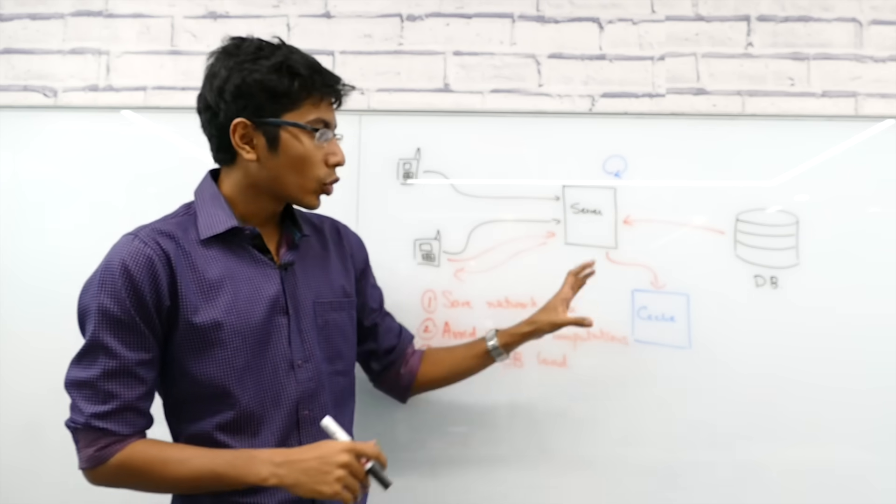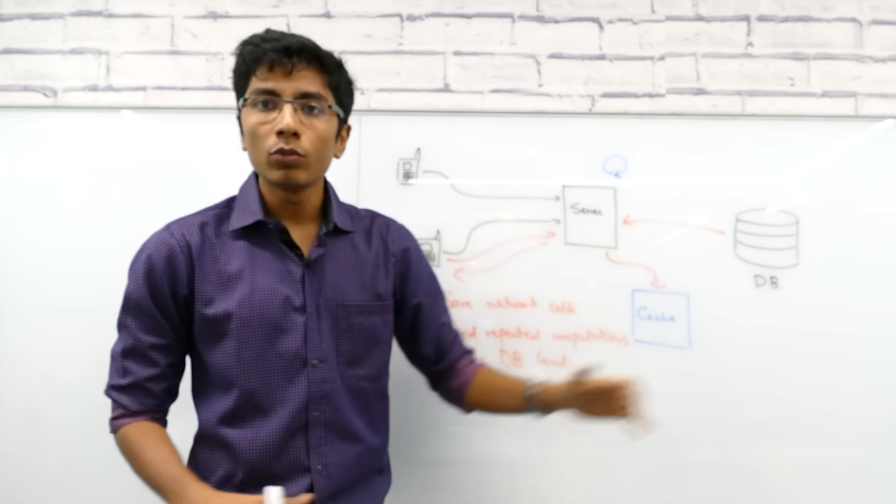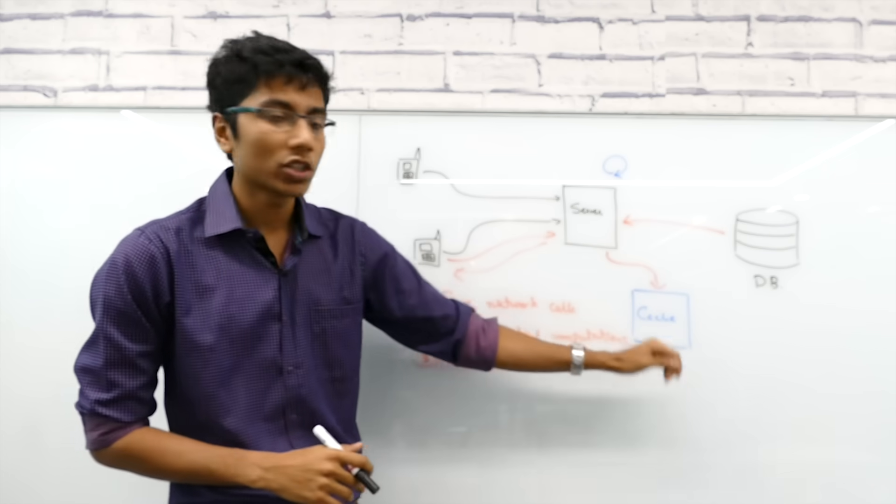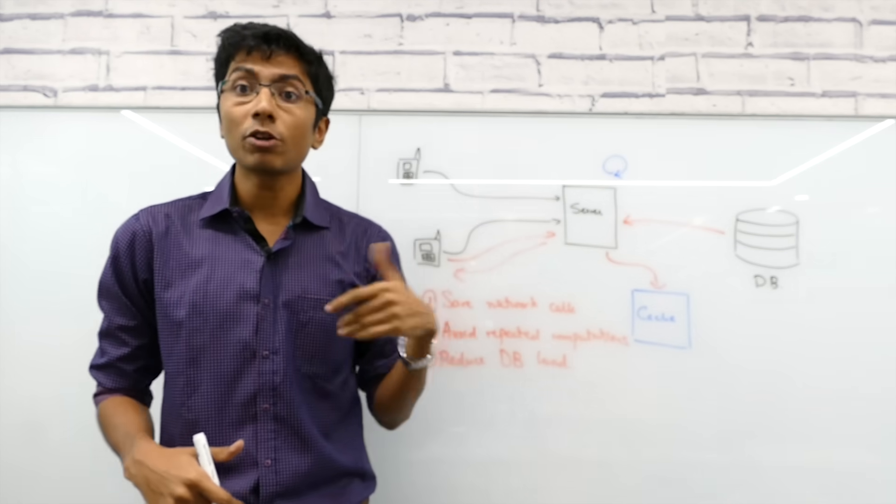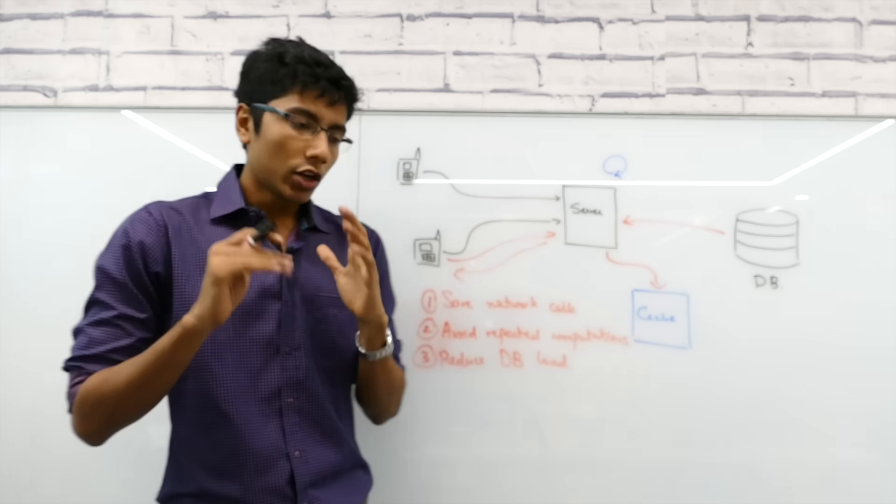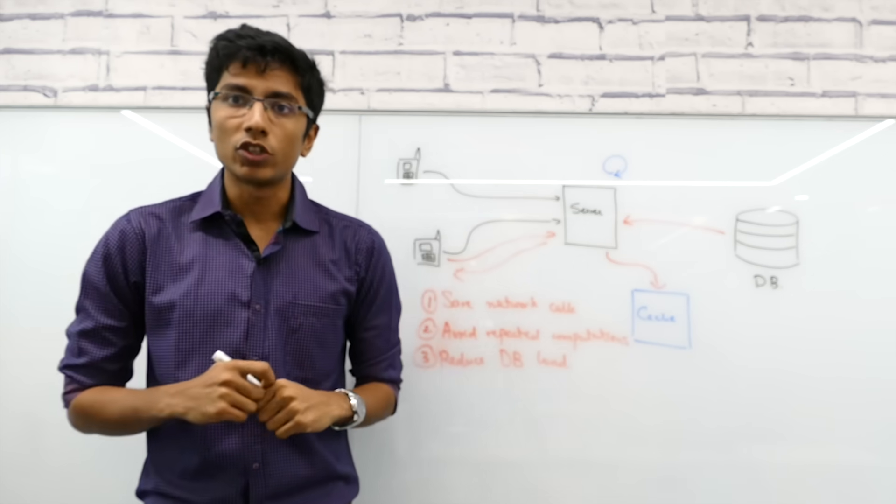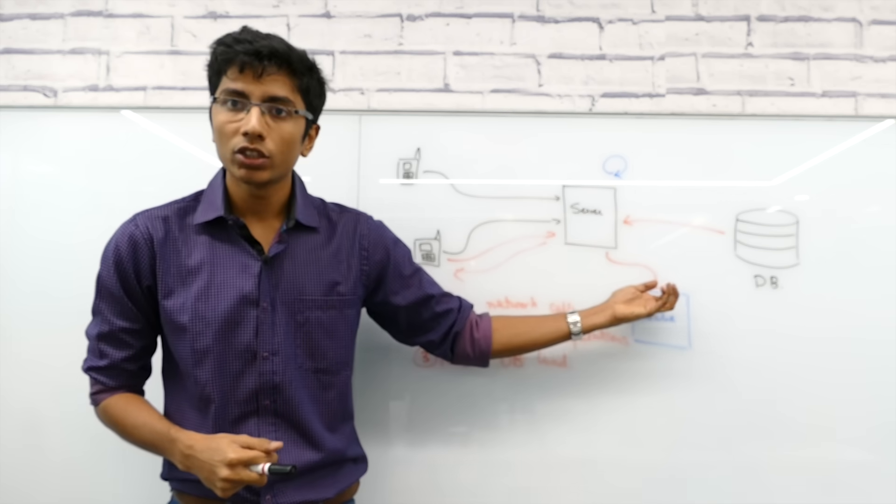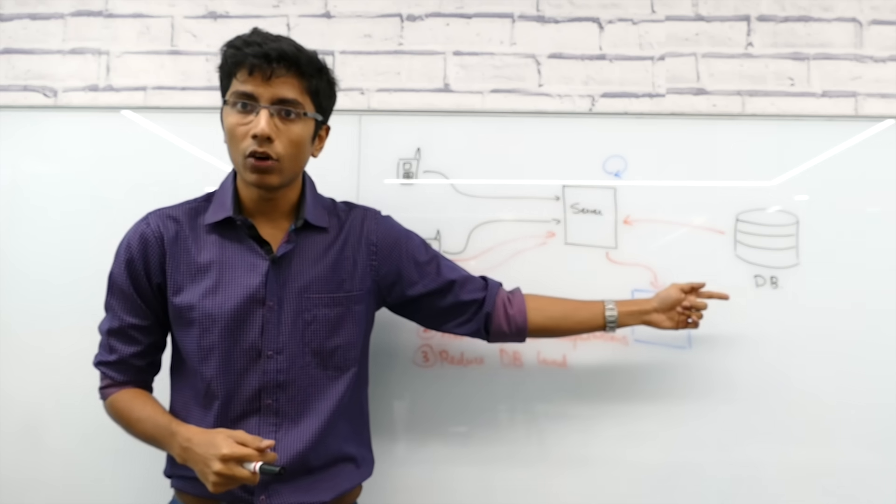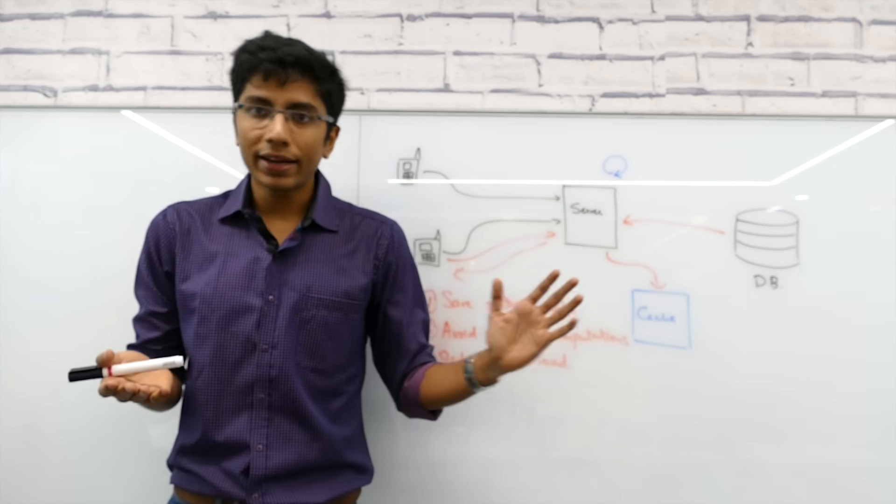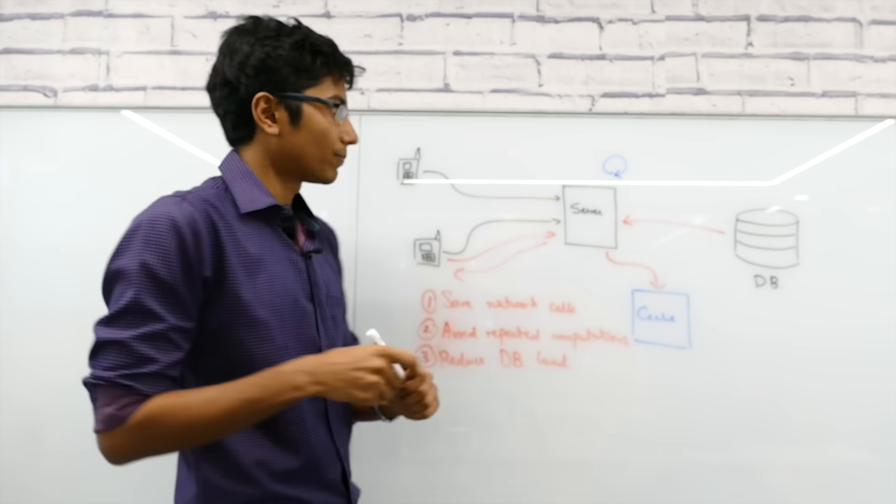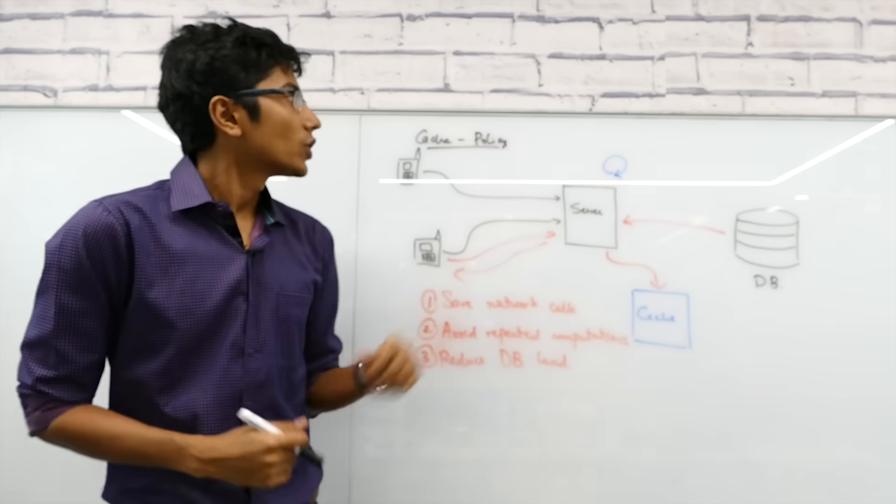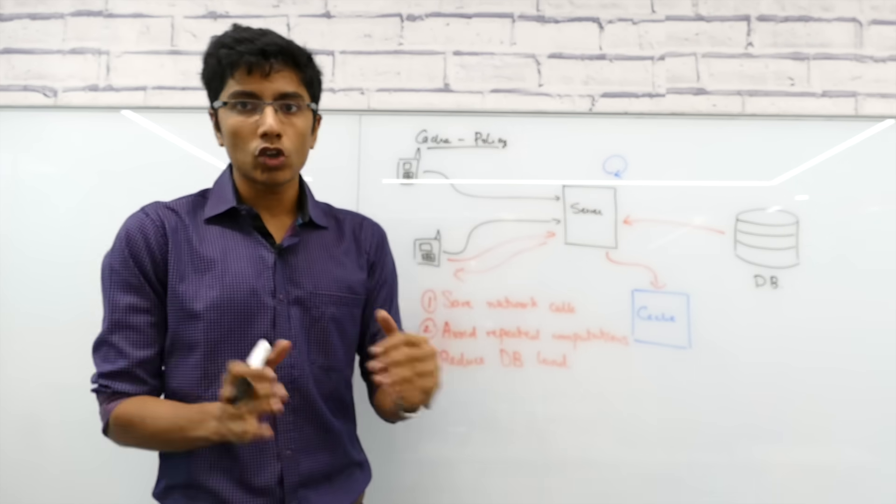So our problem becomes storing information in cache such that the database has almost infinite information while the cache needs to have the most relevant information according to the requests which are going to come in future. So we need to predict something. To predict things, we need to ask ourselves just two important questions. When do I make an entry in the cache, which is when do I load data into the cache, and when do I evict data out of the cache? The way in which you decide for loading or evicting data is called a policy. And because this video is on caching, this is called a cache policy. So a cache performance almost entirely depends on your cache policy.